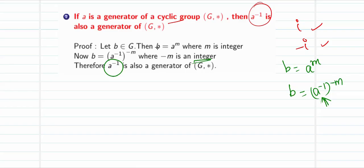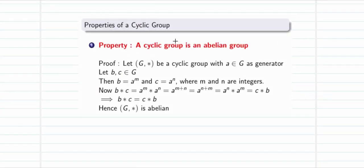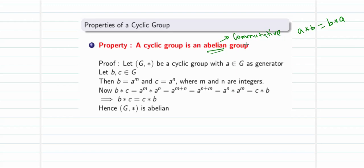We will see one more property of the cyclic group: a cyclic group is abelian. Abelian means commutative — a*b equals b*a. A group satisfies closure, associativity, identity, and inverse. If in addition commutativity holds, the group is called abelian. The theorem states: whenever a group is cyclic, it is also abelian.